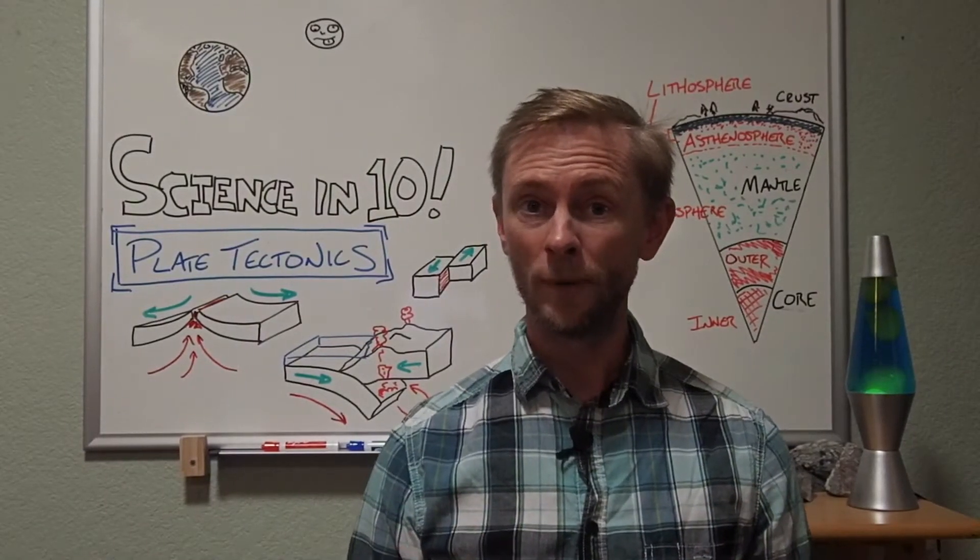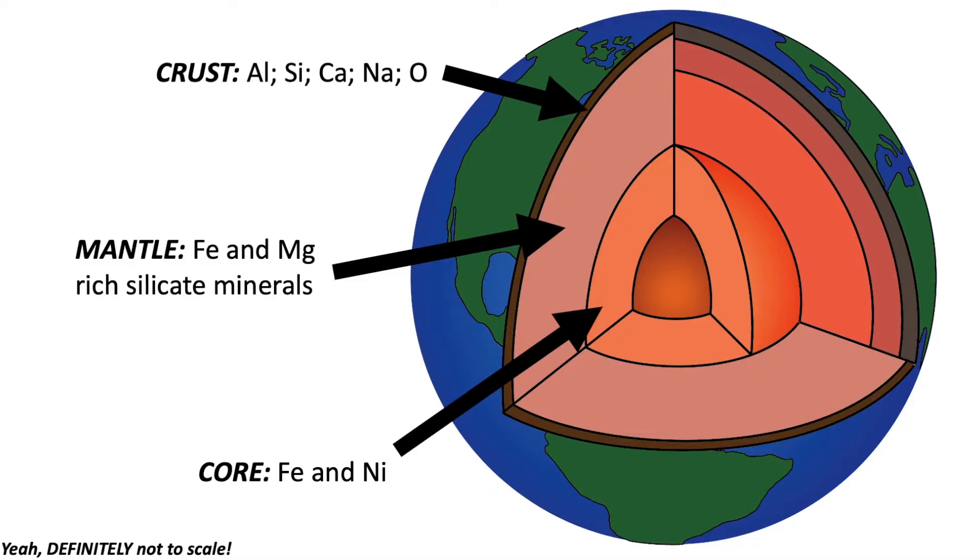Surrounding the mantle, we have the thin crust of the Earth. This is the lightest material that floated all the way towards the surface during that early density stratification. Many minerals that compose rocks in the Earth's crust are high in aluminum, calcium, silicon, and oxygen.